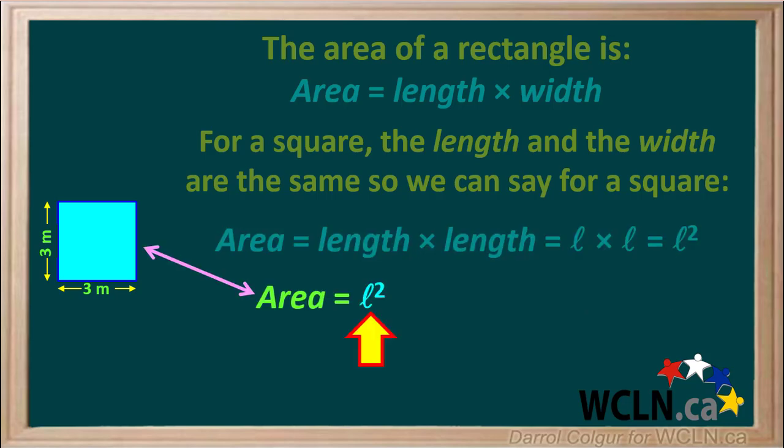So the area of this 3 by 3 square is equal to L squared, which is 3 meters times 3 meters, which comes out to 9 meters squared, or 9 square meters.